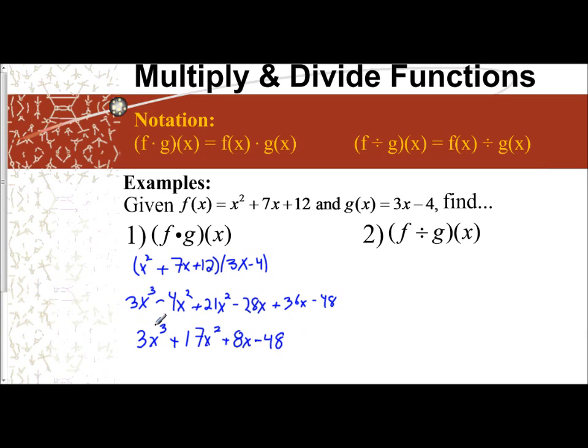I'm going to combine my like terms. 3x cubed is all by itself. Negative 4x squared plus 21x squared is plus 17x squared. Negative 28x plus 36x is plus 8x, and I have minus 48. When I distribute and combine like terms, it's no different than multiplying a polynomial together. And so this is multiplying two functions together.